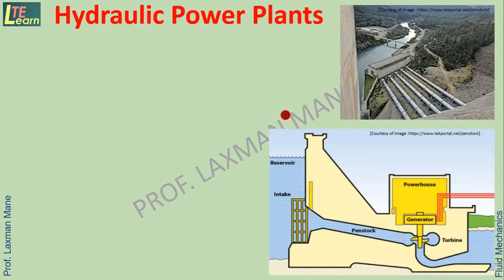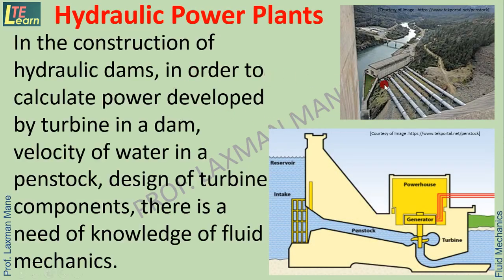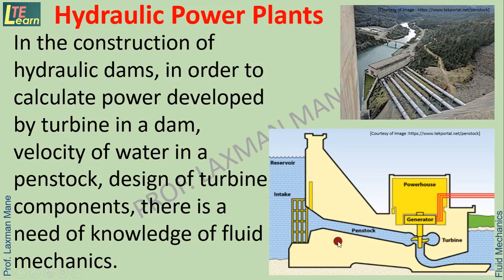In case of hydraulic power plants and the construction of hydraulic dams, in order to calculate the power developed by the turbine when water flows from the reservoir to the turbine through the penstock, the conversion of potential energy to kinetic energy takes place. When the fluid with kinetic energy strikes the Pelton wheel, mechanical energy is generated. The velocity of water in the penstock is determined using turbine formulae from mathematics and fluid mechanics. Design of turbine components — blade size and number of blades — requires knowledge of fluid mechanics.